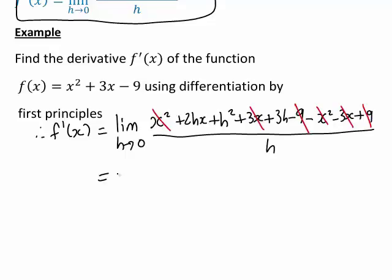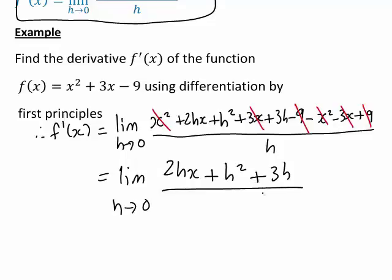Let's see what we have left now. Limit as h approaches 0, and at this stage we're left with 2hx + h² + 3h divided by h.